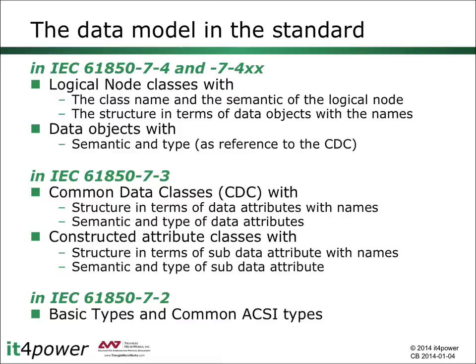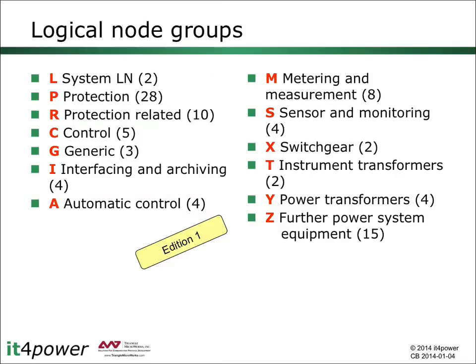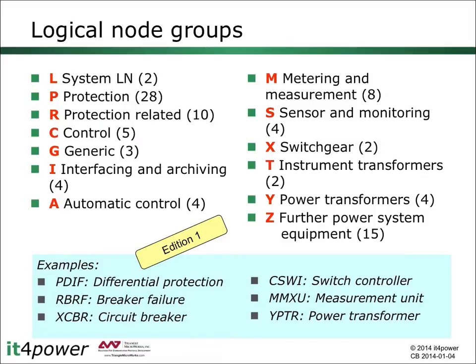Let's have a closer look at how these definitions are presented in the standards documents. Logical nodes defined in part 7.4 are grouped based on their functionality. A logical node class name is always standardized and has four characters, where the first character is reserved for the group indication. Examples include the logical node PDIF for differential protection, belonging to the protection group, and RBRF representing breaker failure functionality, belonging to the protection-related logical nodes group.